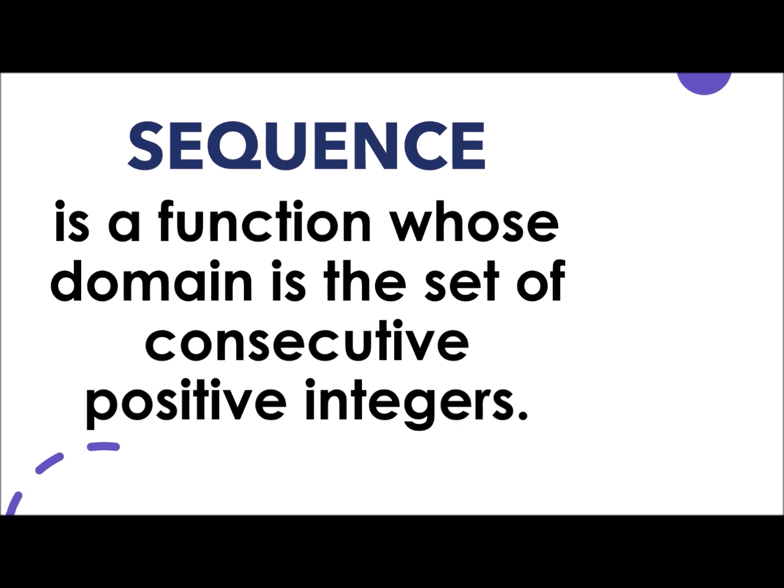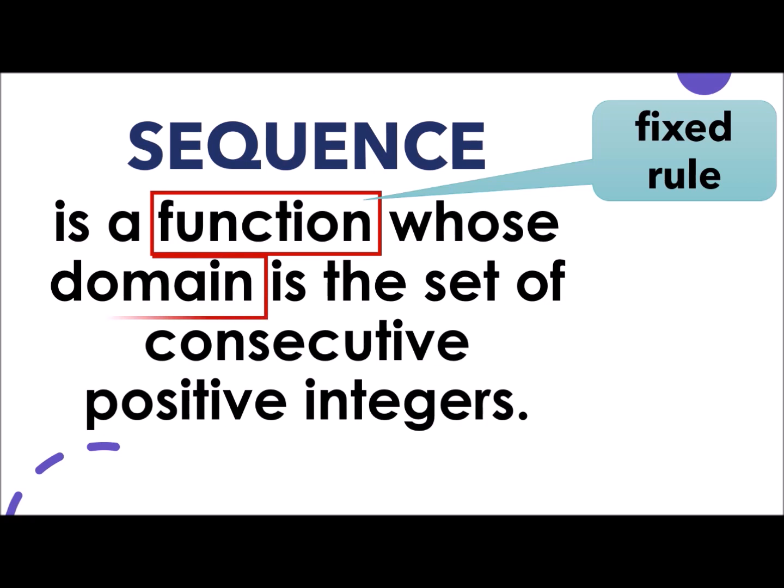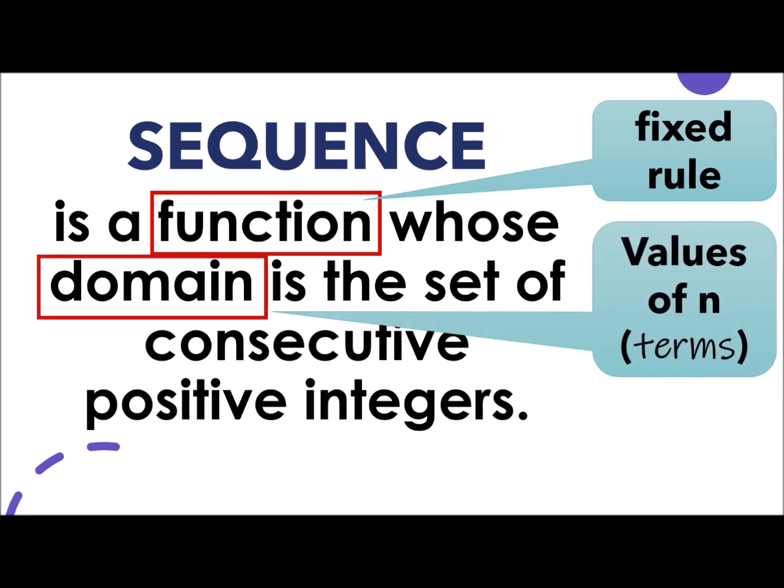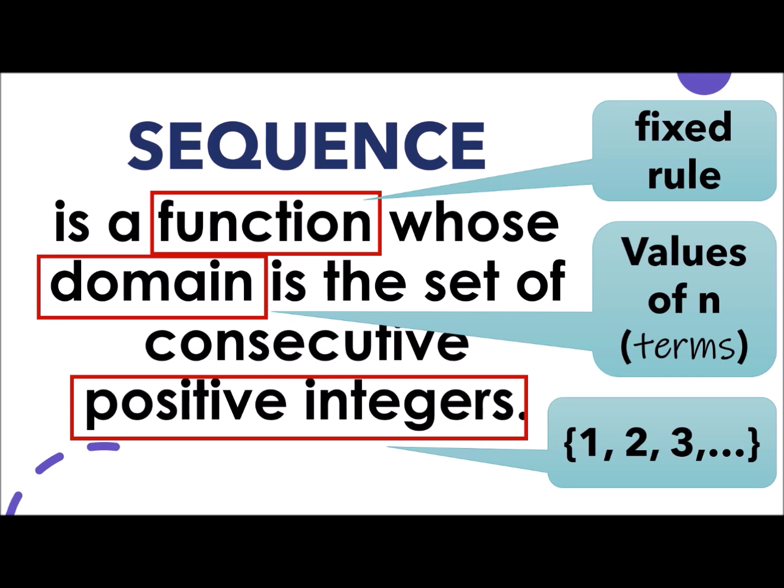Let us unlock some terms. The first one is a function. We've learned that during our grade 8. But for this year, that pertains to a fixed rule. The next one is the domain. It means the values of n or the terms. And the last one, the positive integers. In our grade 7 lesson, it pertains to the numbers that start from 1, 2, 3, and so on. I hope this helps you a lot.